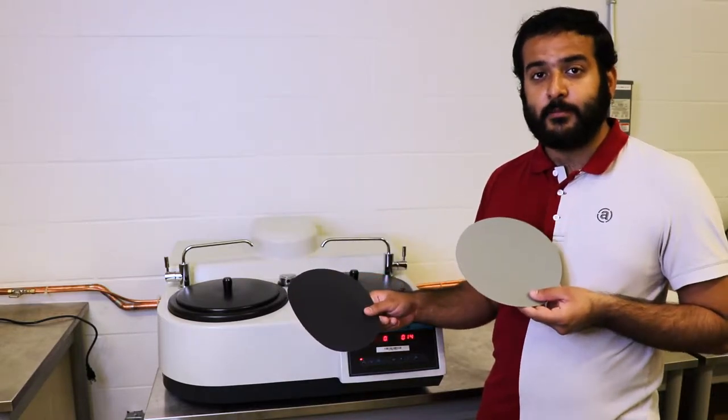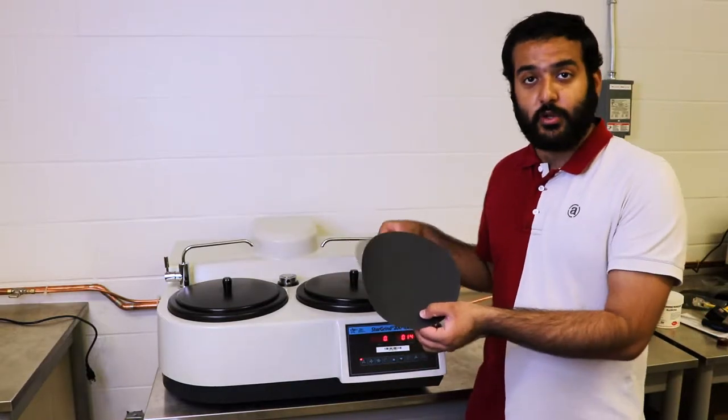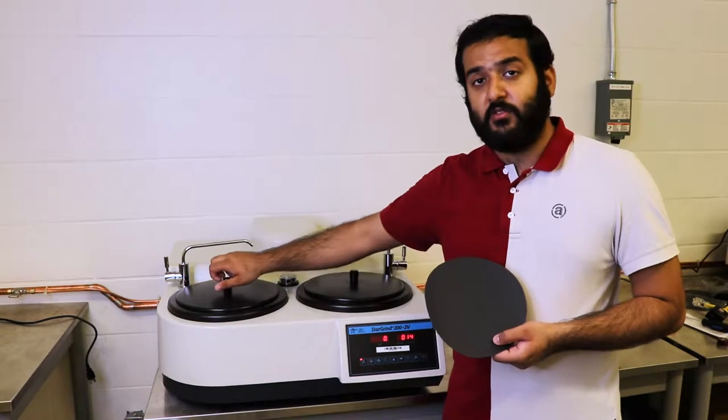We're going to show you how to mount it. It's quite simple. Let's start with 180 grit. You want to start by opening the lid of the machine and putting it to the side.